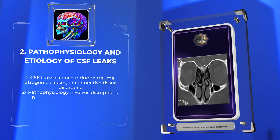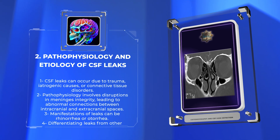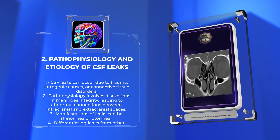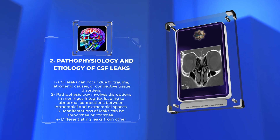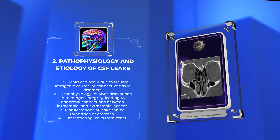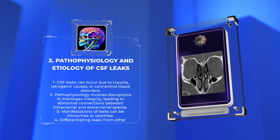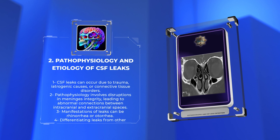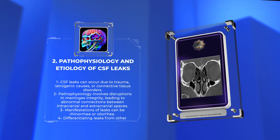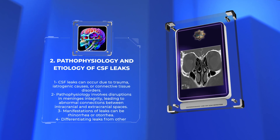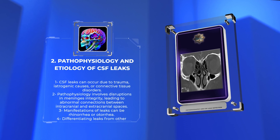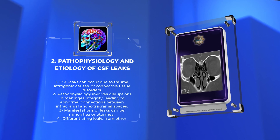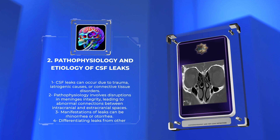CSF leaks can occur due to various etiologies, such as trauma, iatrogenic causes, or underlying connective tissue disorders. The pathophysiology involves disruptions in the integrity of the meninges, leading to abnormal connections between the intracranial and extracranial spaces. These leaks can manifest as rhinorrhea or otorrhea, and differentiating them from other causes is crucial for accurate diagnosis and management. The camera zooms in on a diagram illustrating the different types of CSF leaks.